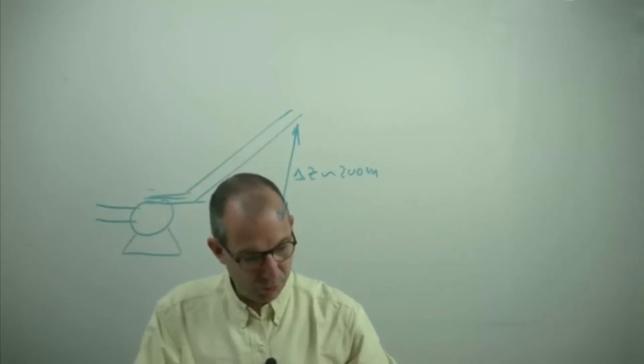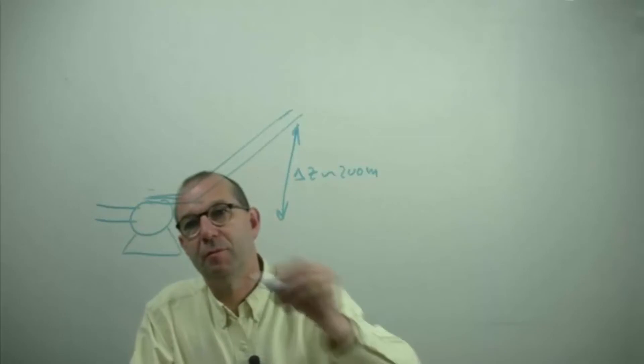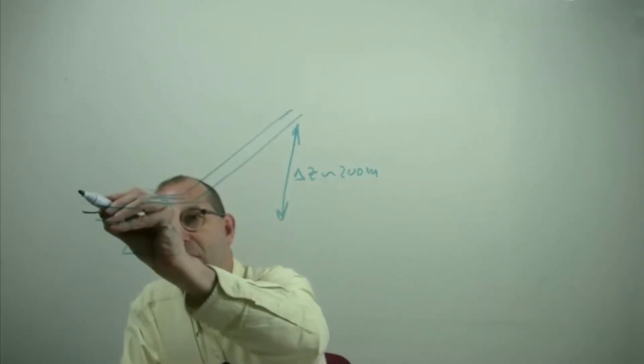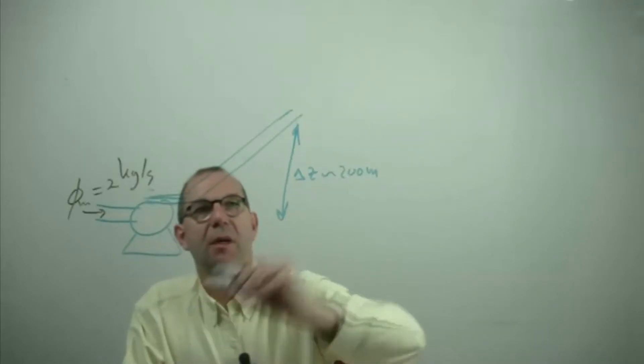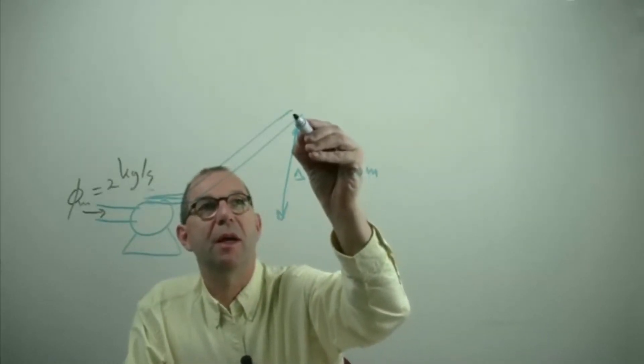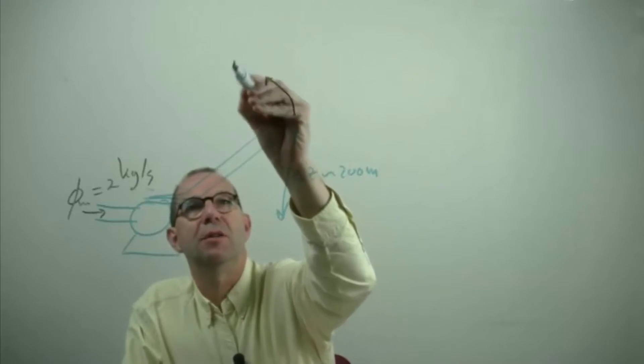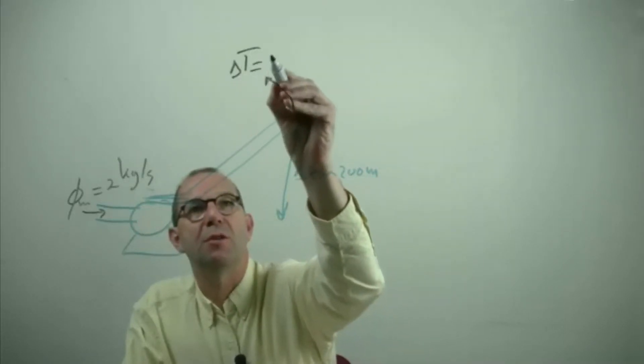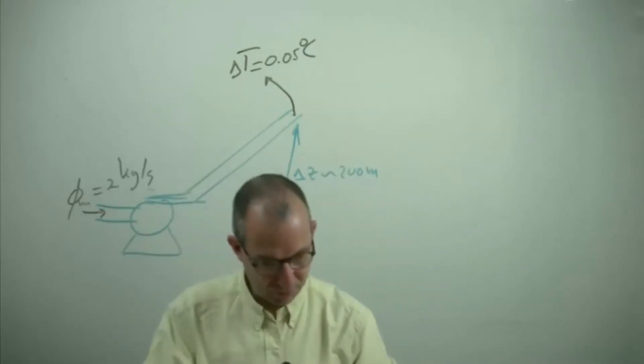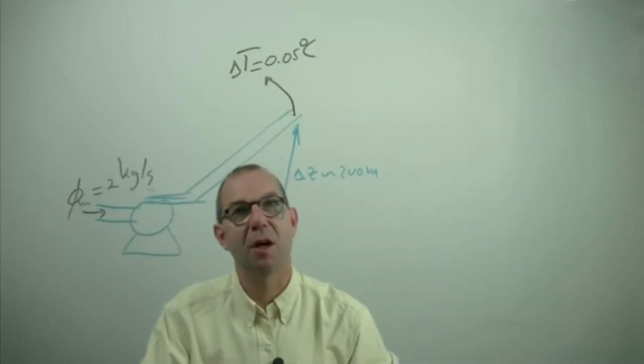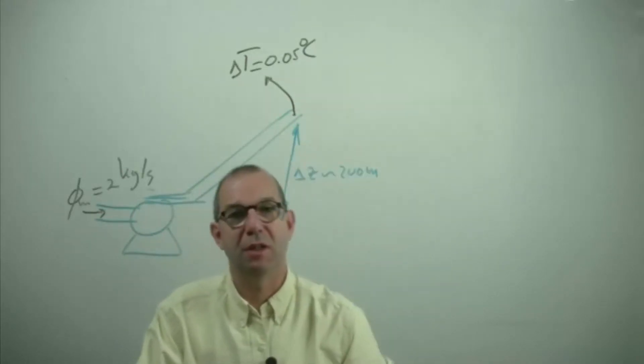The water is flowing in at a flow rate of 2 kg per second and what we find is that at the end the temperature of the water has gone up by a little bit, hardly measurable but it has gone up as a consequence of friction in the system.